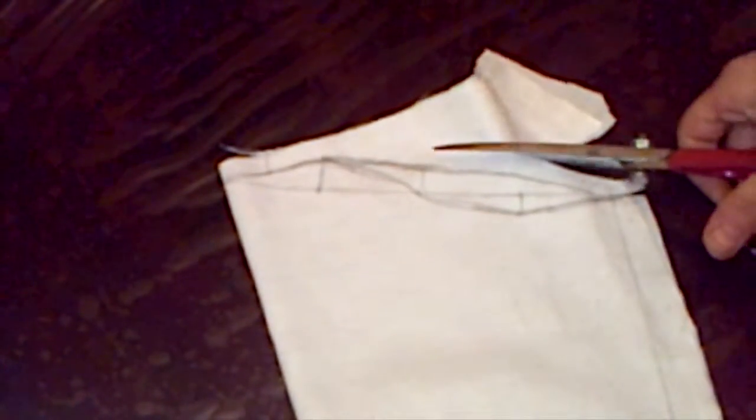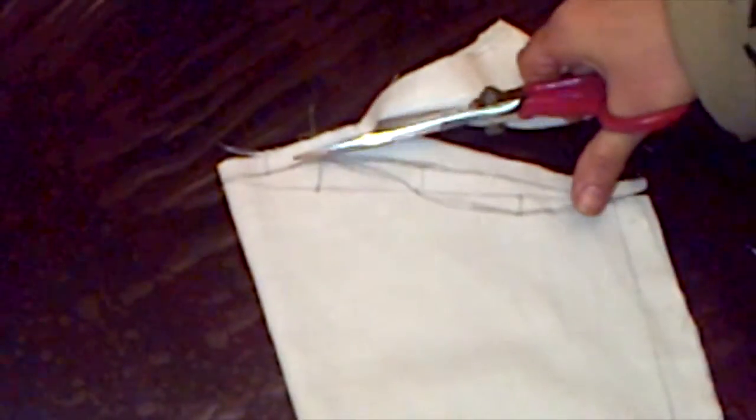For this part, leave half inch for the seam allowance and first cut the back of the sleeve. Then open the sleeve, take one part of the folded sleeve, and cut the front of the sleeve draft.